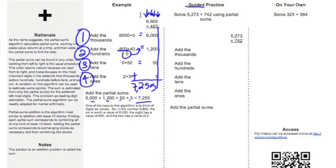Now let's take a look at the guided practice. Our next one. We need to solve 5,273 plus 742 using partial sums. Again, we're going to start with the leftmost place value, which is the thousands place.